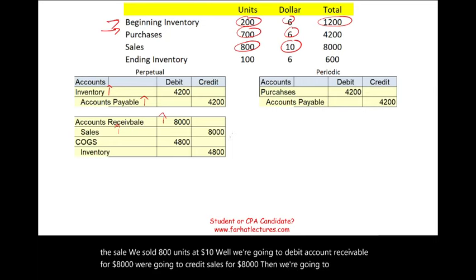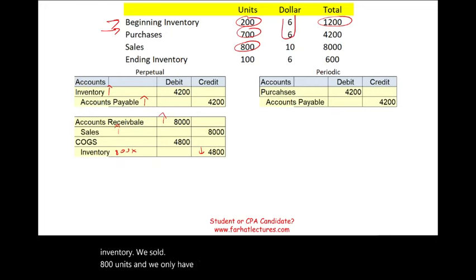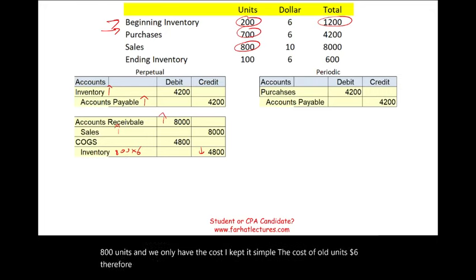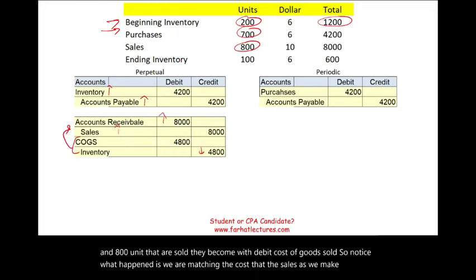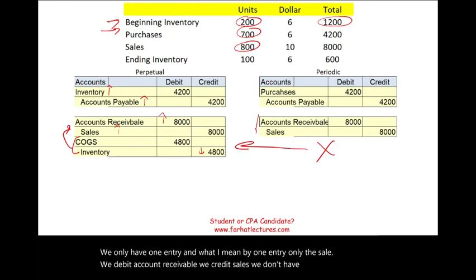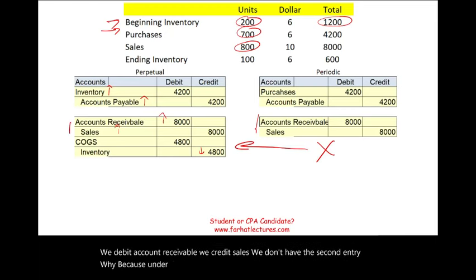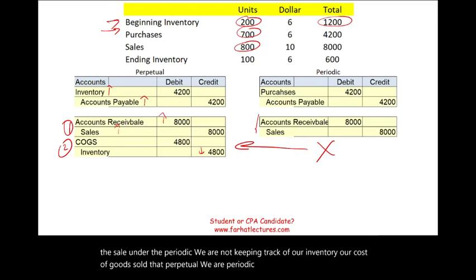Under the perpetual system, we also record the cost of the sale: 800 units at $6 equals $4,800. We debit Cost of Goods Sold and credit Inventory for $4,800, matching the cost to the sale. Under the periodic system, we only record the sale entry — debit Accounts Receivable, credit Sales — there is no second entry because we are not keeping track of inventory or cost of goods sold transaction by transaction. Under periodic, that gets accounted for later.